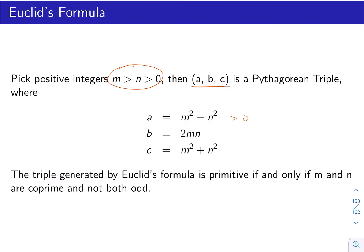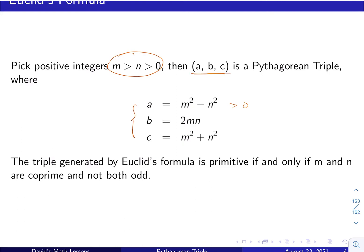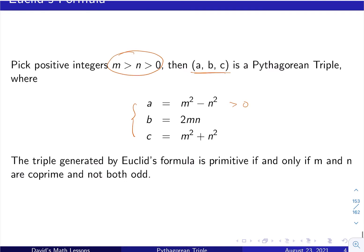Because m is greater than n, this quantity is positive. We claim that a, b, c form a Pythagorean triple, and we use simple algebra to verify that. So a squared equals m to the fourth minus 2m squared n squared plus n to the fourth.